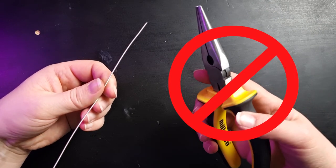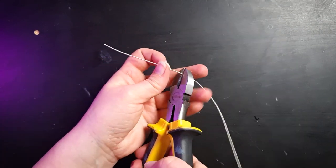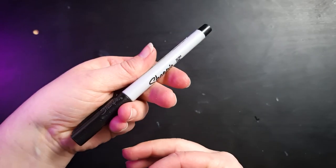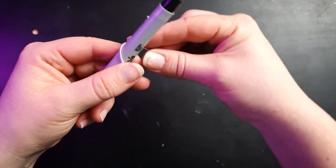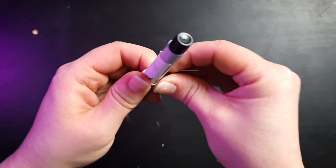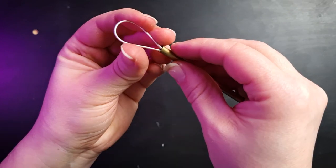I don't use pliers to shape my guitar string as this can damage the surface. Instead I wrap it around something with the right diameter and over stretch it for it to hold its shape better.